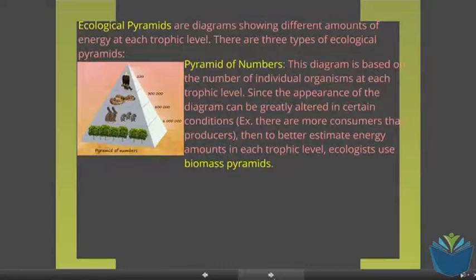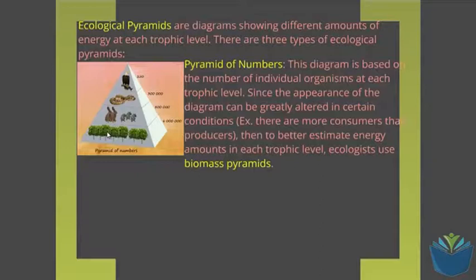The problem with pyramids of numbers is it can be massively skewed and it doesn't take into account if one of the organisms is a lot bigger than the other. A good example of this is caterpillars which feed upon trees. The tree is much, much bigger than the caterpillar and therefore the pyramid would be skewed. It would show very, very narrow at the bottom, so one tree and thousands upon thousands of caterpillars within the second trophic level.